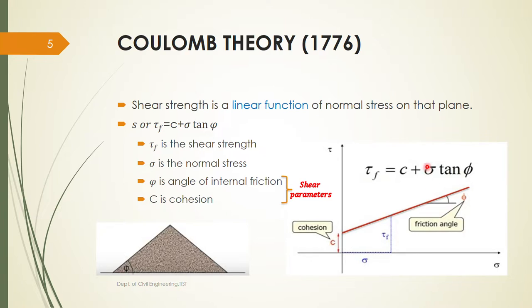In this equation, c is the cohesion — the force of attraction between soil particles. σ is the normal stress. φ is the angle of internal friction. Practically, if you form a natural heap of soil, this angle of repose corresponds to the angle of internal friction φ. The angle of internal friction and cohesion c directly contribute to the shear strength, and c and φ are known as the shear parameters.